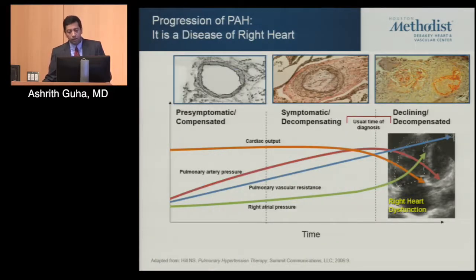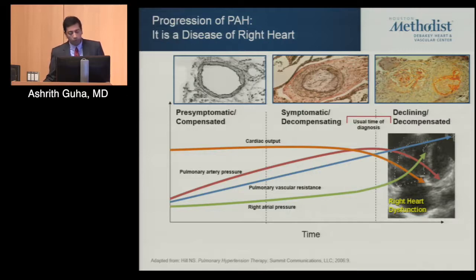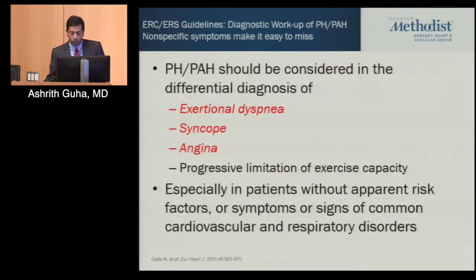Looking at the natural history of pulmonary hypertension: as the disease progresses, pulmonary artery pressure goes down but right atrial pressure increases, indicating worsening RV dysfunction, and cardiac output decreases. In essence, pulmonary hypertension is really a disease of the right ventricle, and that's what ties into prognosis.